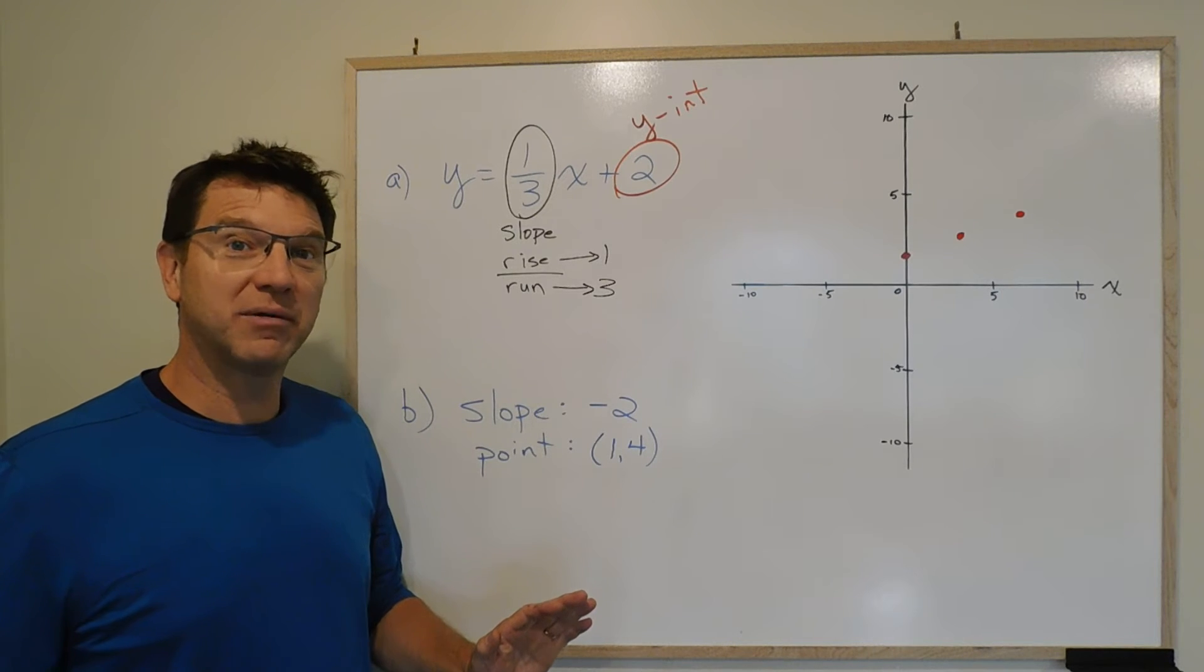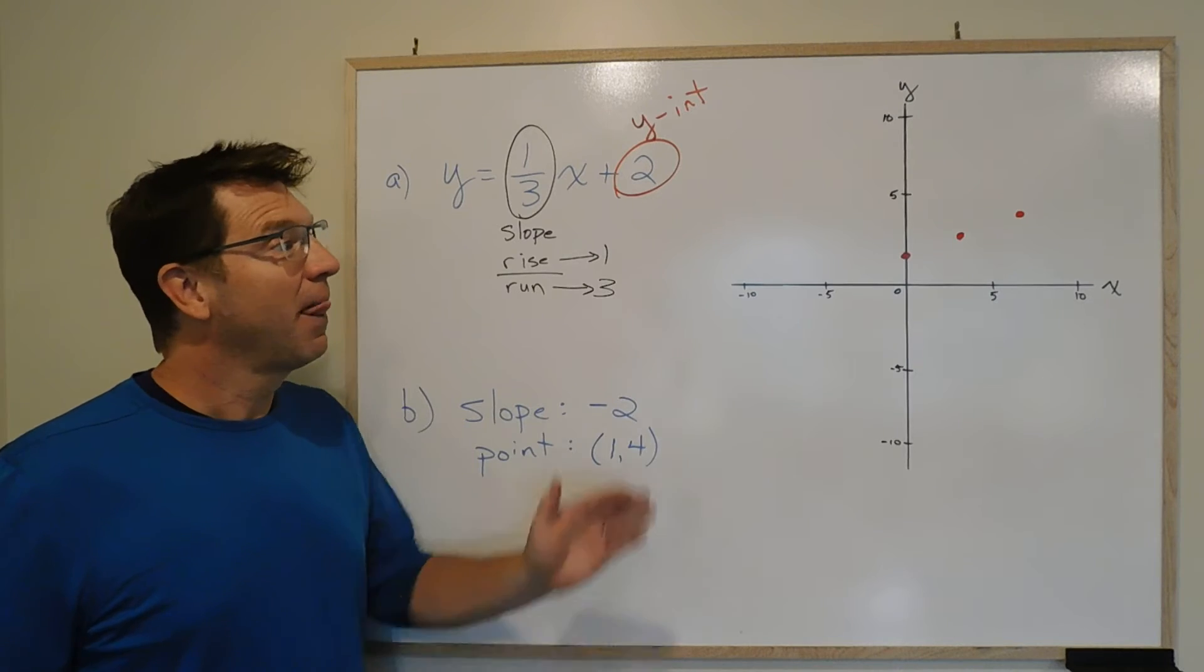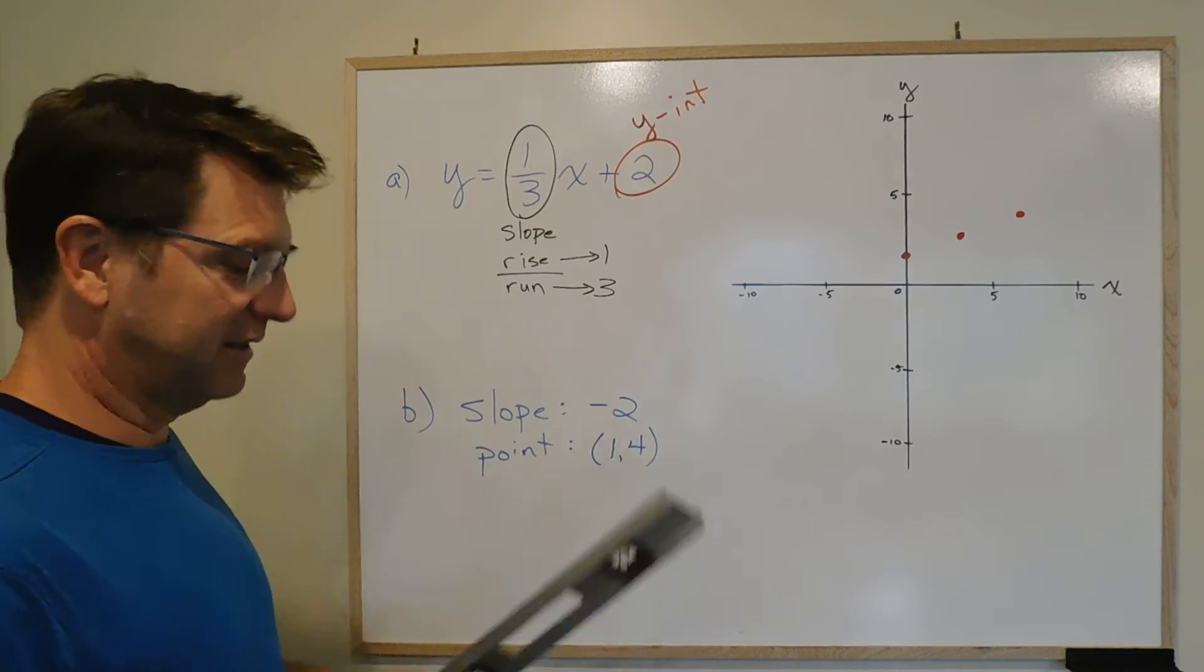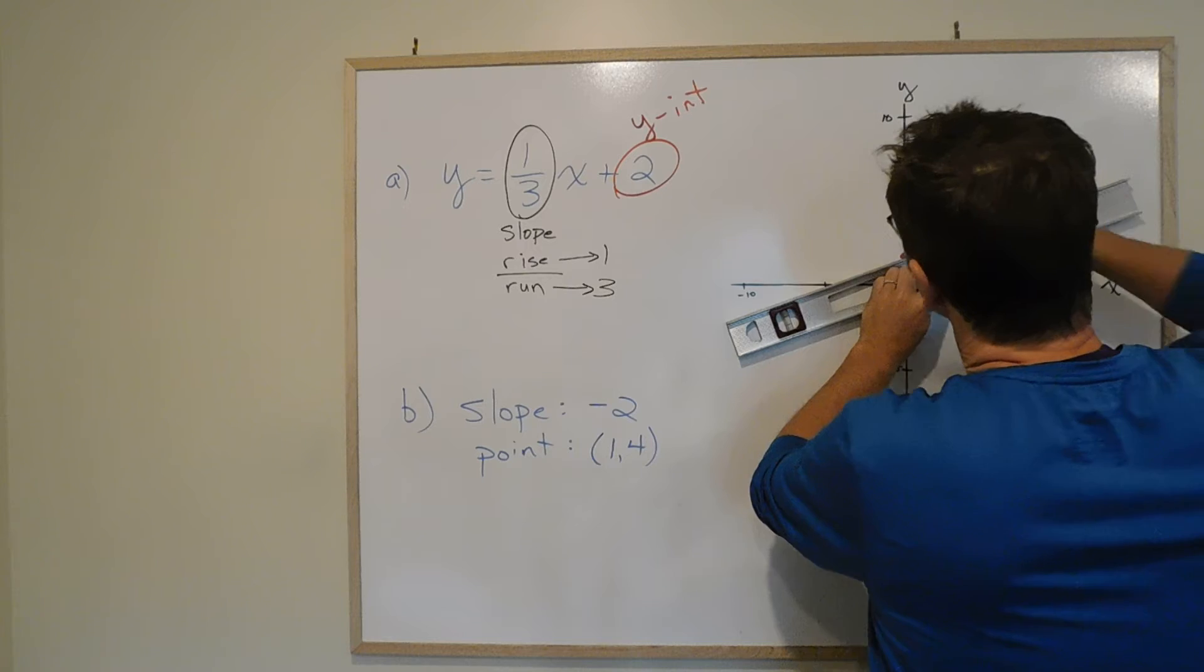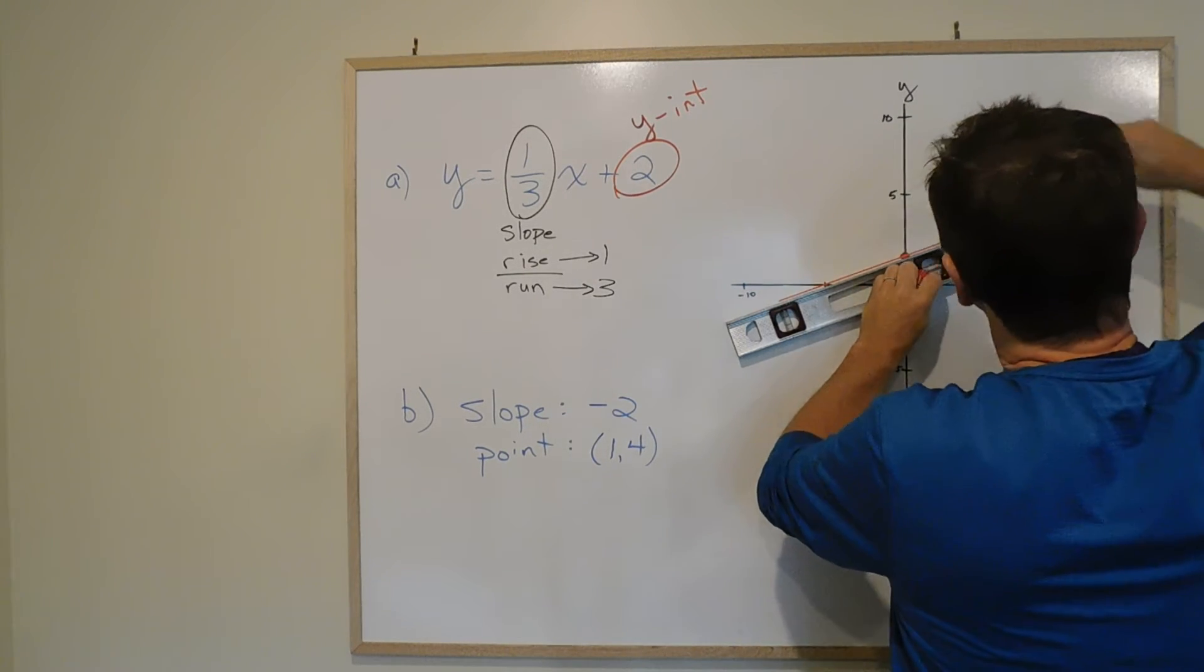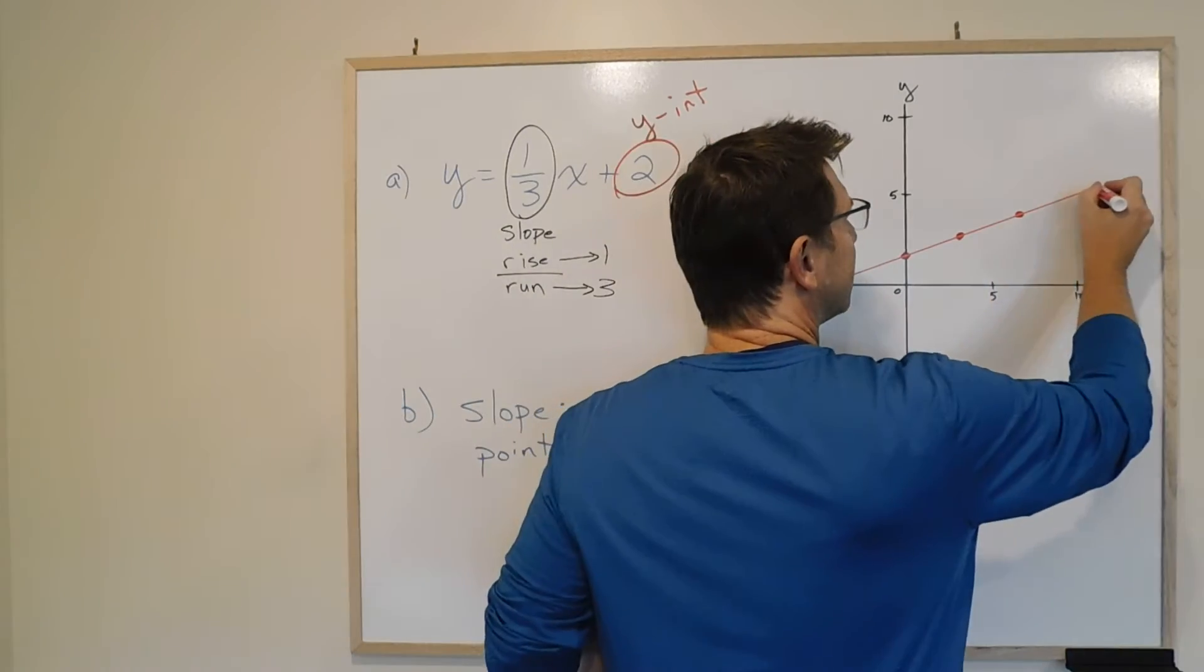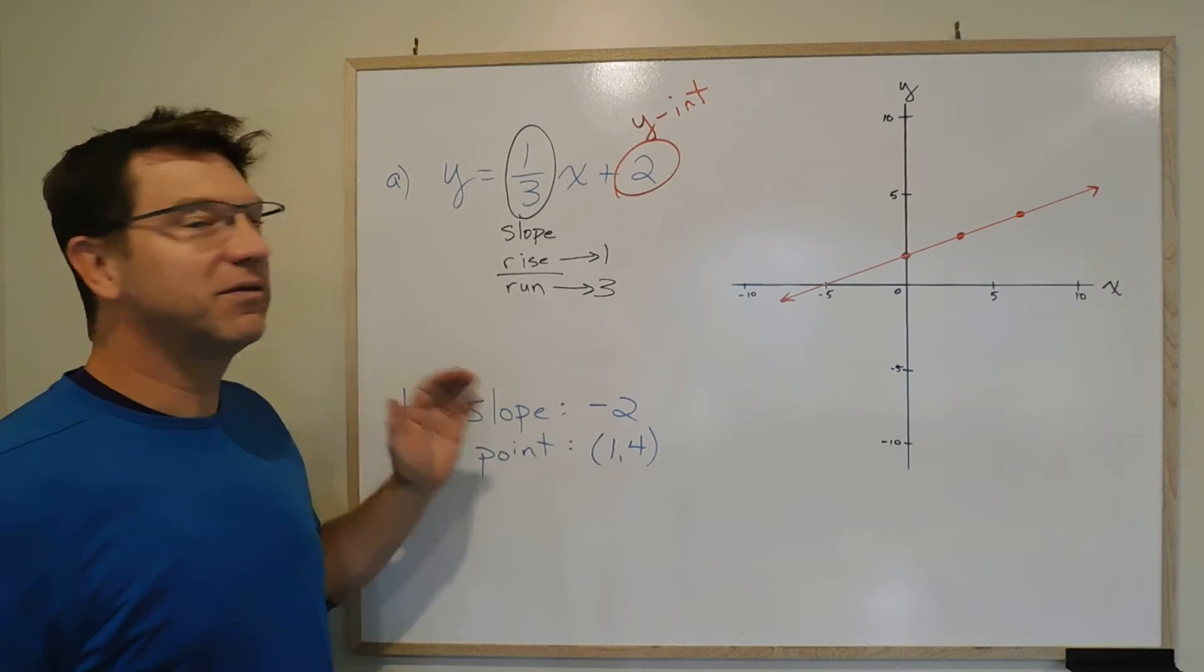If we only did 2 points and made a mistake, we'd never know it because any 2 points, you can just draw a line through it. But if the 3 points line up, then likely we have not made a mistake. And in this case, here we go. Those 3 points line up.